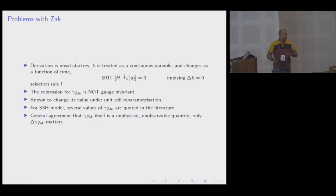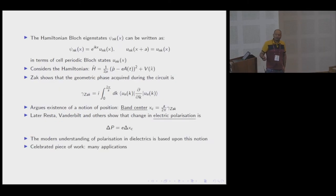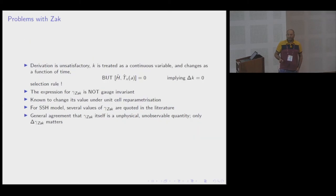There are several values of Zak phase noted in literature. In our preprint, we have quoted several references. Each paper, one book gives one value π/2, somebody gives minus π/2, somebody gives zero, somebody gives π. When we started looking at this problem, we were baffled: what is the correct value of the Zak phase?